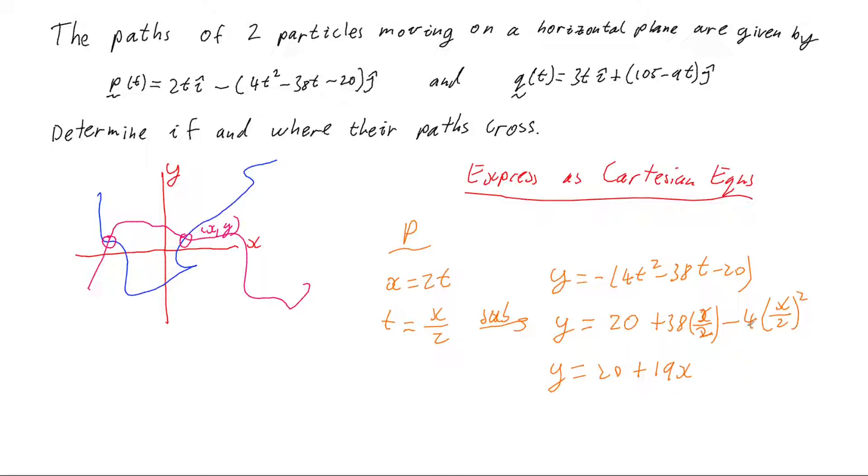So then tidying this up I've got 20, half of 38 is 19 so I'm going to have plus 19x. Then 2 squared is 4 so the 4s are going to cancel each other out so I'm going to have minus x squared. So that's the equation for the p particle.